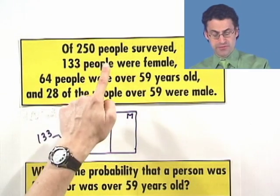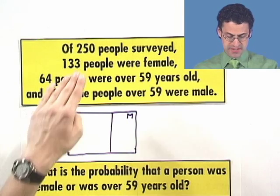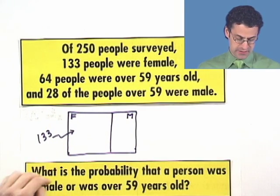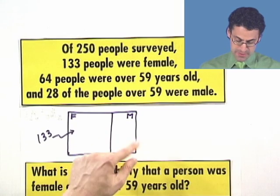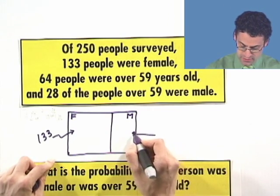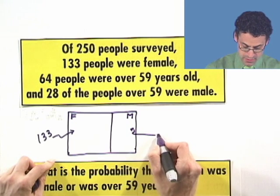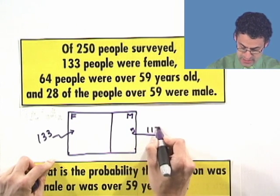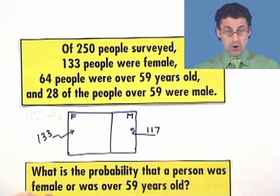We know there's a total of 250 people surveyed, which means that if we take 250 and subtract off 133, we see how many males there were, so we can immediately see how many males there are. There are, in here, right here, a total of 117.